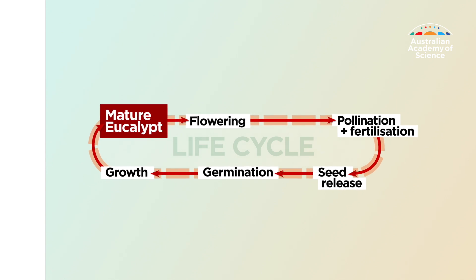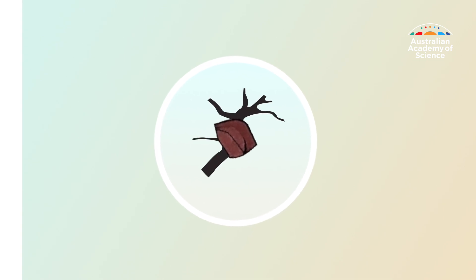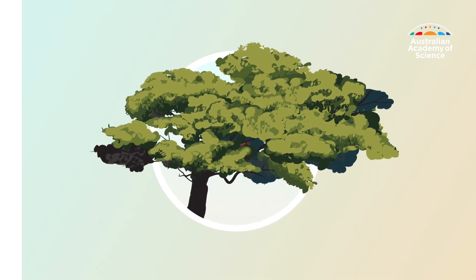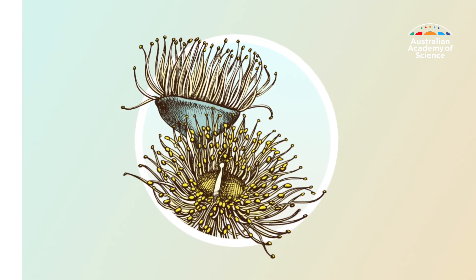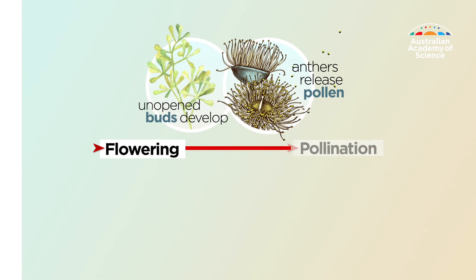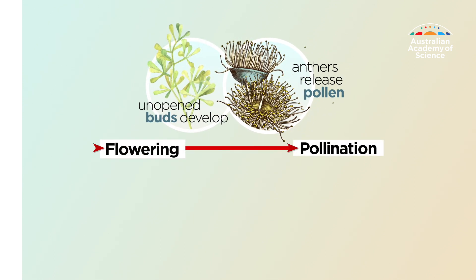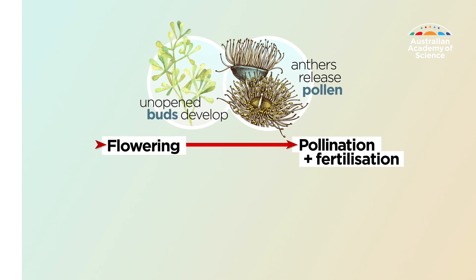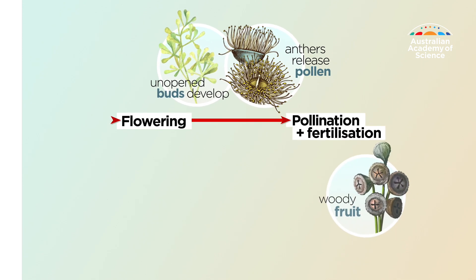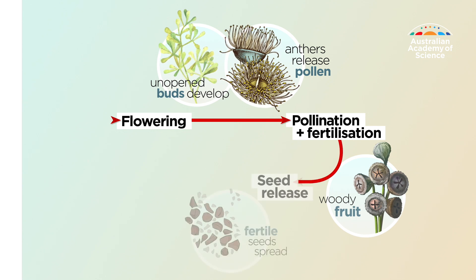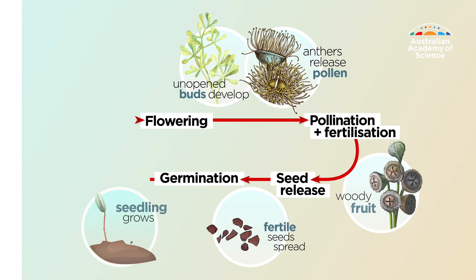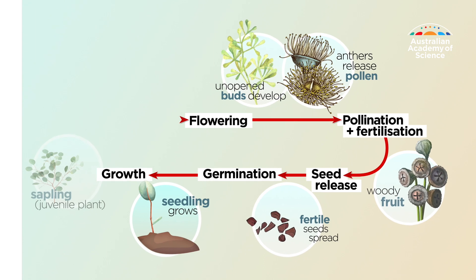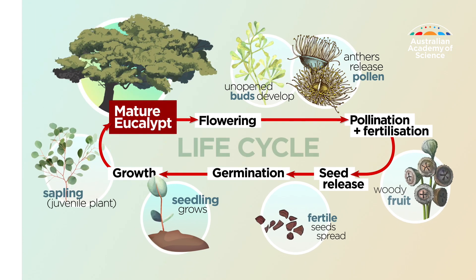Like all living things, eucalypts have a life cycle. A gum tree starts its life as a seed and grows into a mature tree. After about 10 years it flowers — the flowers look like a colored fluffy brush inside a cap. They're pollinated by wind, bees, and birds. When fertilized, fruit develops — a woody capsule or gum nut — which contains seeds that are released and fall to the ground. If conditions are right, the seed germinates and grows into a seedling, then a taller sapling, and then a tree.